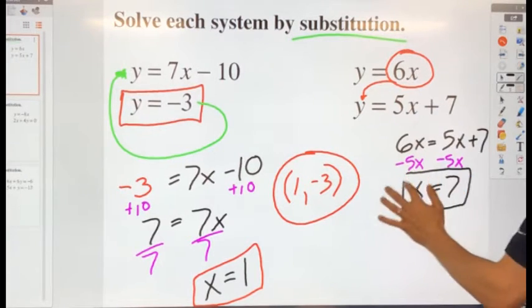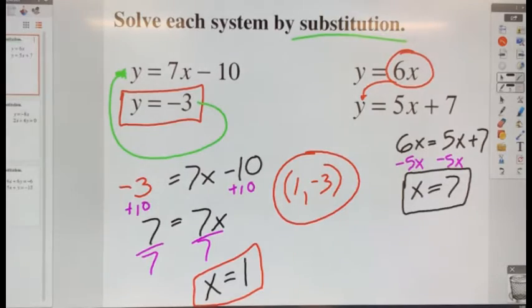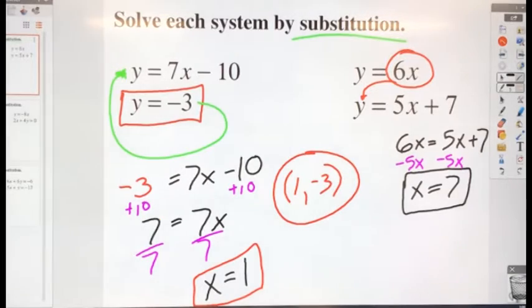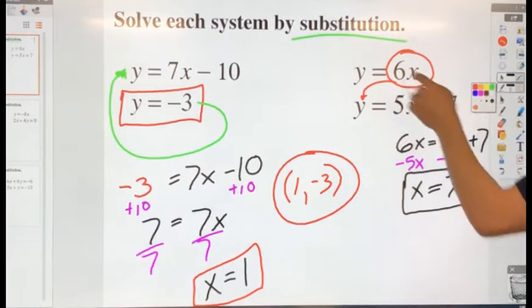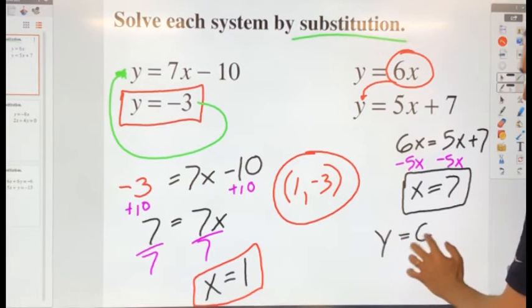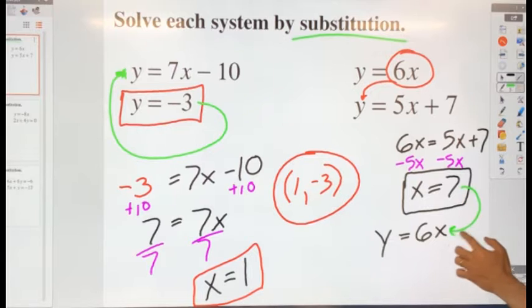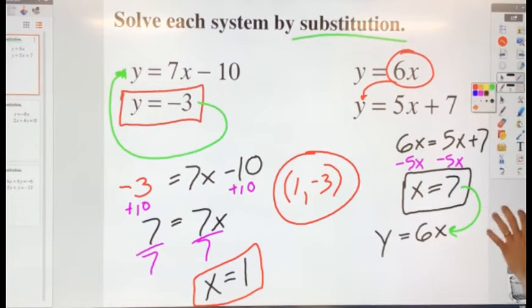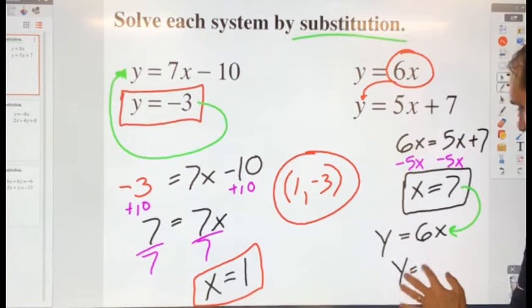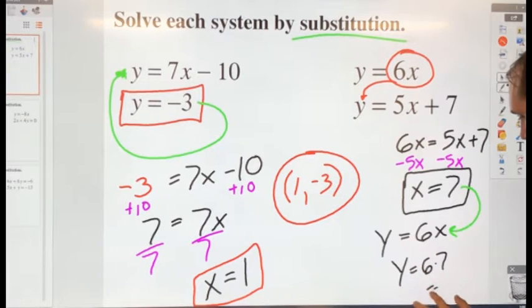So I now know my x value is 7. How do I find my y value? Yeah, I can substitute or plug it into any one of these equations. This one here is y equals 6x, so let me plug in x for 7. That's going to give me y equals 6 times 7, which is 42.